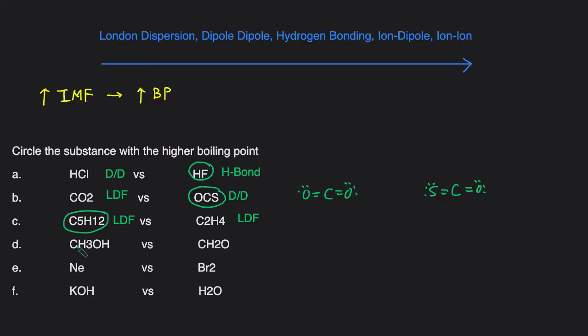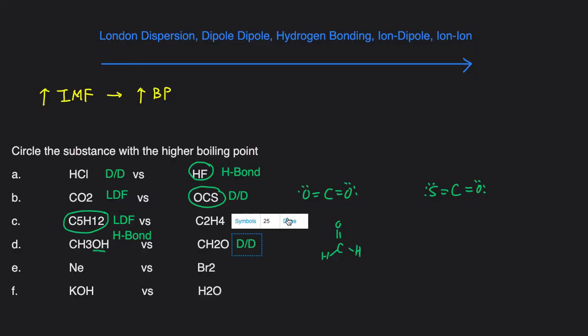Next one CH3OH. We see immediately this OH right here so we know this one will have hydrogen bonds. And then CH2O that looks like this. You see it doesn't have hydrogen bond but this molecule is not symmetrical because there's two hydrogens and one oxygen, so this makes it polar and if it's polar it'll be dipole-dipole. Hydrogen bonding is stronger than dipole-dipole so CH3OH will have the higher boiling point.